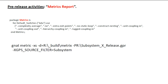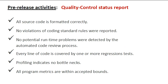The package metrics in the release project specifies the kinds of metrics to be measured. The report appears as an XML formatted file and the corresponding XML schema is also generated. So once the Quality Assurance Phase is finished, we should see this report: all source code is formatted correctly, no violations of coding standard rules were reported, no potential runtime problems were detected by the automated code review process, every line of code is covered by one or more regression tests, profiling indicates no bottlenecks, and all program metrics are within acceptable bounds.